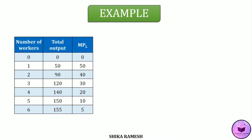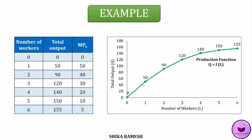In this table, we can see the number of workers and the corresponding total output produced with respect to increase in the number of workers. When the first labour is hired, the total output is 50 units. When the second labour is hired, together the two labourers contribute a total output of 90 units, whereas the marginal productivity of the second labour is only 40 units. By employing the third worker, all three workers together contribute a total output of 120 units, whereas the marginal productivity of the third worker is only 30 units. So total output is increasing with each additional worker, but the marginal productivity of each worker is decreasing. That is why the law of variable proportions is also known as the law of diminishing marginal returns or diminishing marginal productivity.